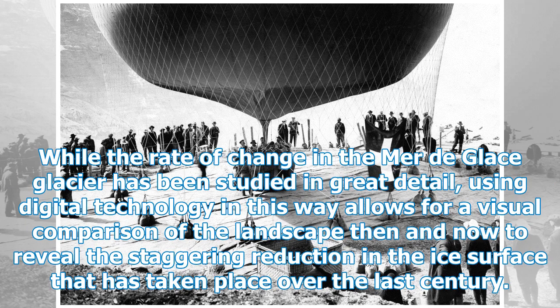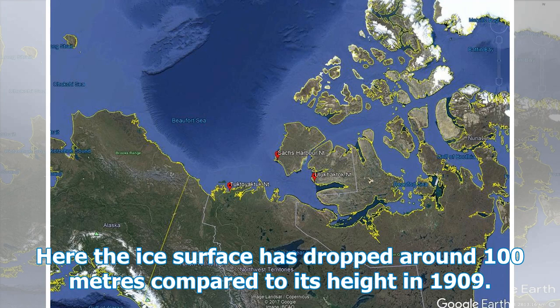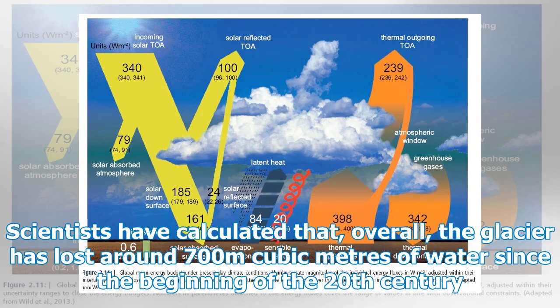While the rate of change in the Mer de Glace glacier has been studied in great detail, using digital technology in this way allows for a visual comparison of the landscape then and now, revealing the staggering reduction in ice surface over the last century. Today, visitors alighting at the Montenvers Railway Station are no longer confronted with the Mer de Glace at close range but instead look down upon a largely empty valley and debris-covered glacier far below. Here the ice surface has dropped around 100 meters compared to its height in 1909. Scientists have calculated that, overall, the glacier has lost around 700 million cubic meters of water since the beginning of the 20th century.